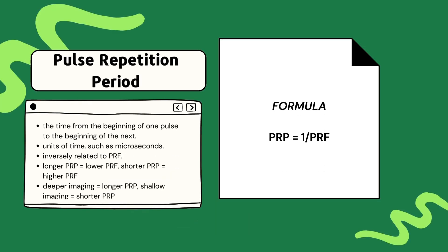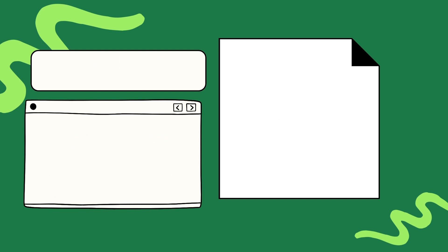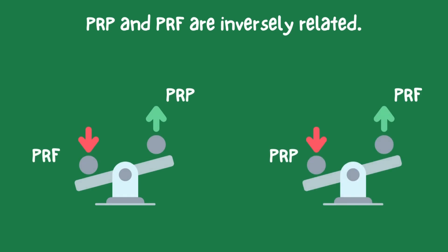Now let's discuss pulse repetition period, or PRP. This is simply the time from the beginning of one pulse to the beginning of the next. Just like period is measured in units of time, PRP is also measured in units of time, like seconds or microseconds. PRP and PRF are inversely related — when the PRP is longer, the PRF is lower, and when PRP is shorter, the PRF is higher.